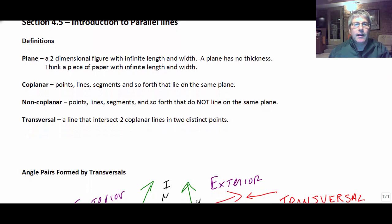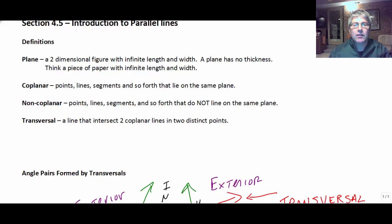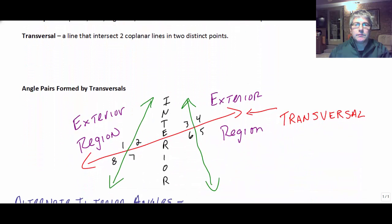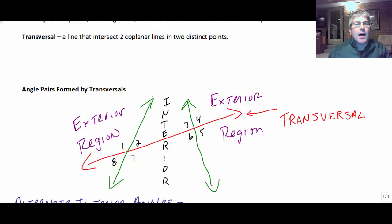A transversal is a line that intersects two coplanar lines in two distinct points. So a transversal, well, let's take a look at our diagram down here. The two green lines would be two coplanar lines or our two distinct lines. So here's one line, here's a second line. I could label that line one, I could label that line two or I could call it like line A or line B.